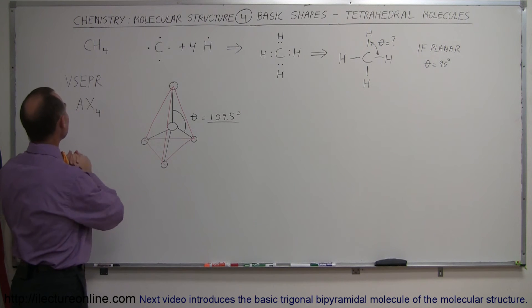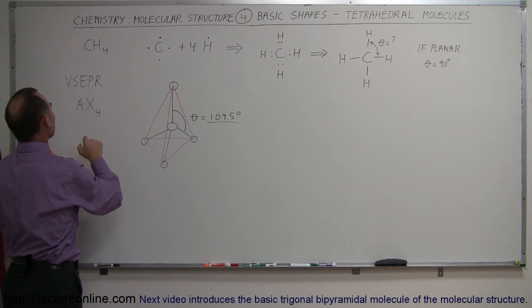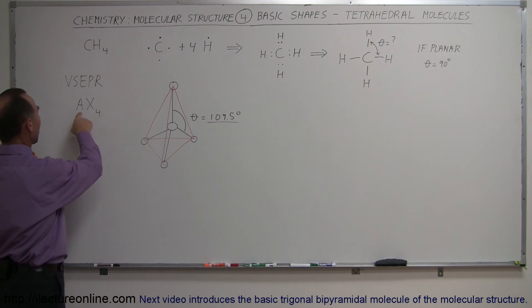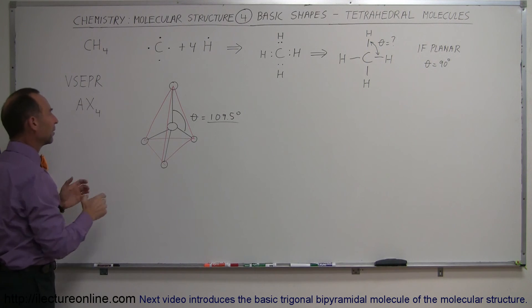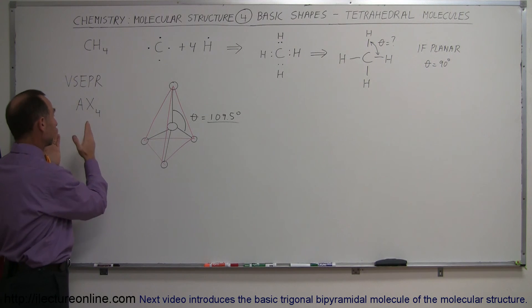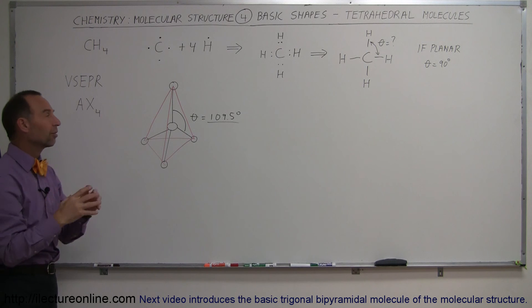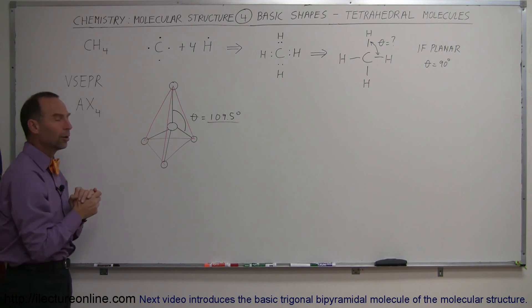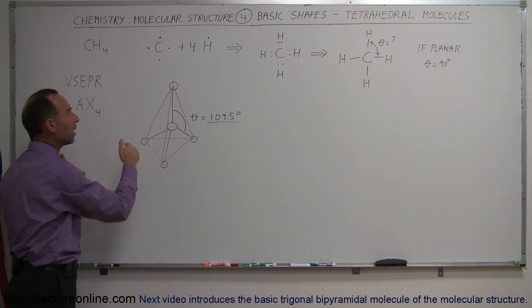Now on the VSEPR notation—that's the valence shell electron pair repulsion concept of how molecules are formed—we have one central atom and we have four terminal atoms. So that's where we end up with the methane molecule. Anytime you have a shape made from this kind of arrangement of molecules, one in the center and four on the ends of the bonds, you'll end up with what we call a tetrahedral shape with the bond angles of 109.5 degrees.